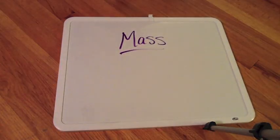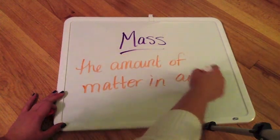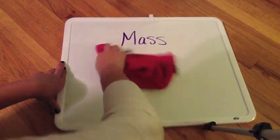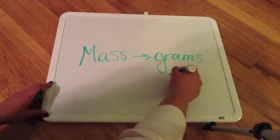Well, mass is different. Mass basically is just the amount of matter in a substance or in an object, so it wouldn't matter if you were on Earth or on the Sun or the Moon or anywhere else—your mass would always be the same. Mass is measured in grams.